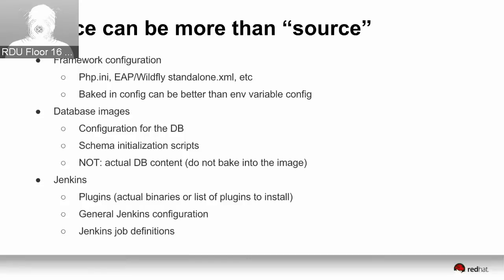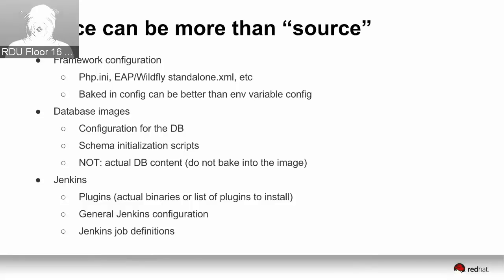The last configuration example is our Jenkins image. The S2I assemble process allows a user to provide Jenkins job definitions and general server configuration as their source, stored in a Git repo for revision management, and quickly build a new custom Jenkins image from that Git repo. The assemble process also lets you list plugins you want installed — it pulls those down and includes them, so we don't have a bloated Jenkins image with everyone's plugins, but it's easy to create a custom Jenkins image with exactly the plugins you want.